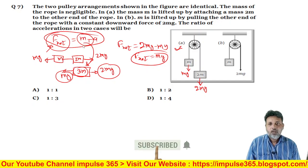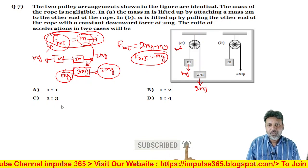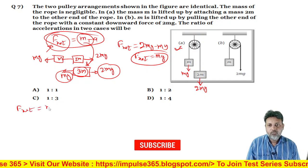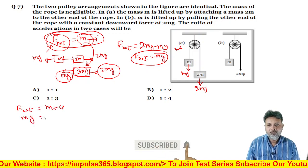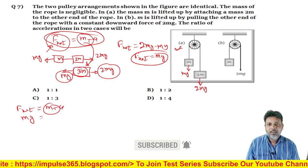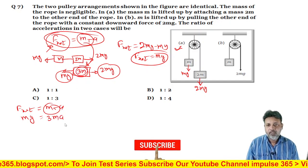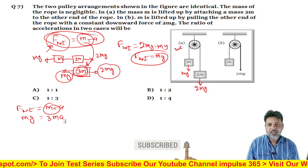Ab yeh value, hum is F_net wale formula mein rakhenge, case 1 mein. To hum yahan rakhte hain, F_net is equal to MT into A. F_net ki jagah, MG put kiya, total mass ki jagah, maine kya bola tha, pure system ka mass 3M, use karenge, into A. Yeh pehle case ka acceleration hai, isliye A1 kya de raha hai, G by 3.